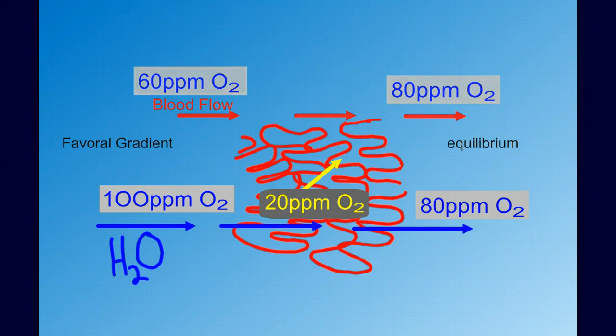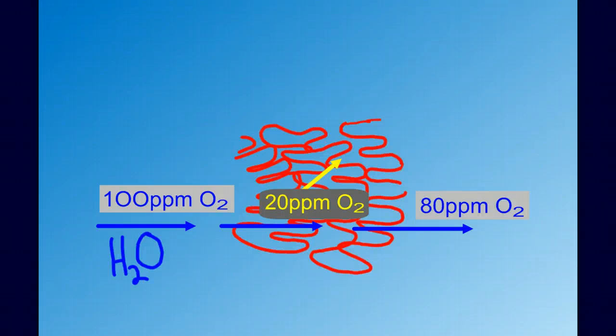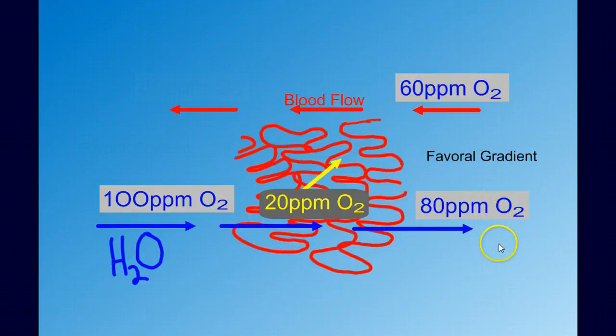Let's turn the system around and bring the blood in from the back of the gills and have it run countercurrent to the water. The blood's coming in at 60, and we have a favorable exchange gradient between the 80 and the 60. Our most oxygen poor blood is meeting our most oxygen poor water, but the water still has more oxygen than blood. By the time we get to the end, our most oxygen rich blood is meeting the freshest water to ensure a favorable gradient throughout this entire system.